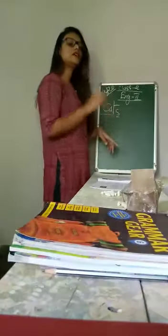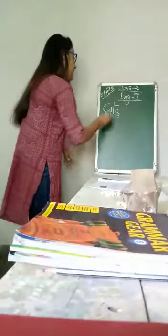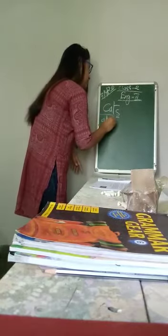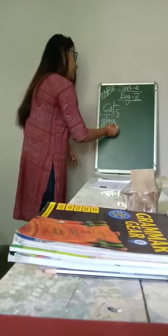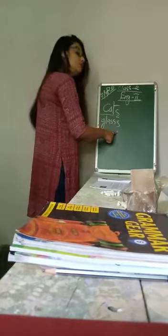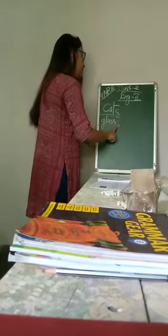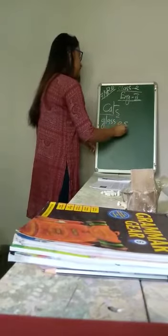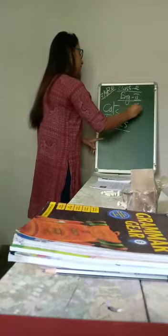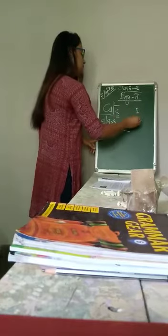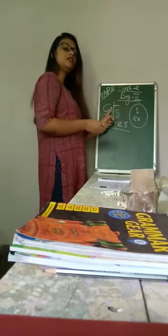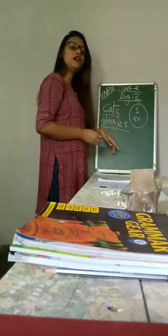But there are some words where at the end there are two S's. Like glass — there is already S, we can't just add another S. So instead we add ES, then it becomes plural. So we can add S or we can add ES to make singular into plural.